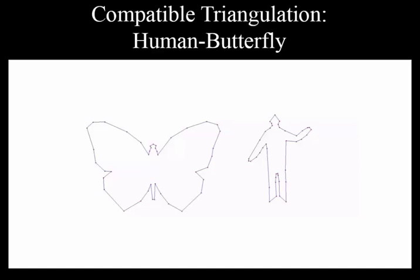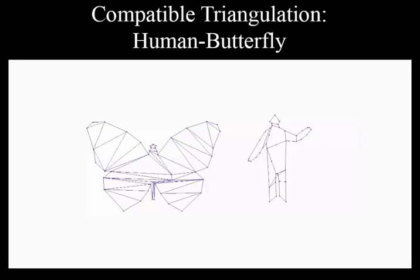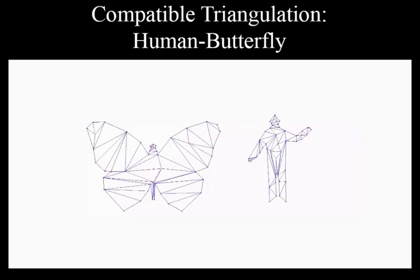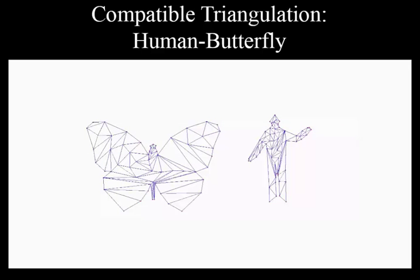Here we show an example of applying our algorithm to compute compatible triangulations. Usually for two simple polygons with around 80 vertices, our method could create compatible meshes within seven seconds.